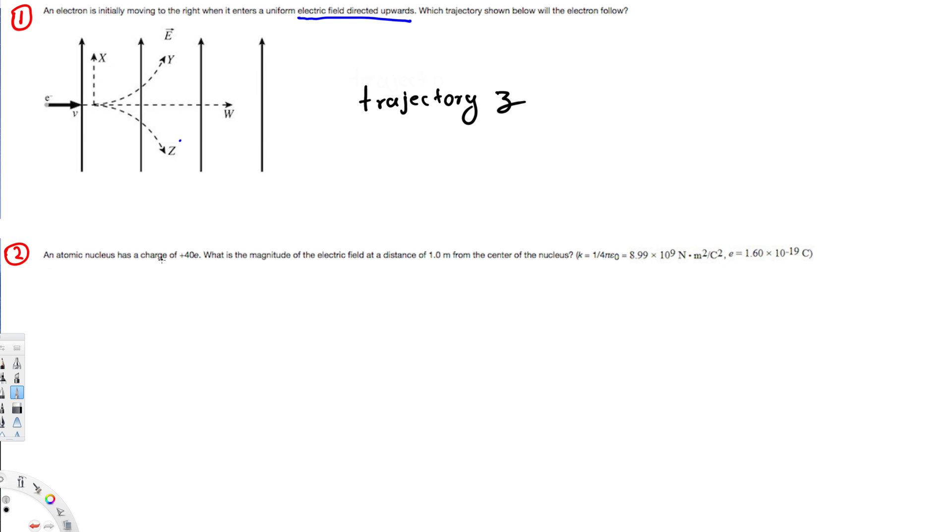Let's look at another question that is asking: an atomic nucleus has a charge of 40 electrons. What is the magnitude of the electric field at a distance of one meter from the center of the nucleus? To find the electric field we use this equation: E is equal to kq over r squared.